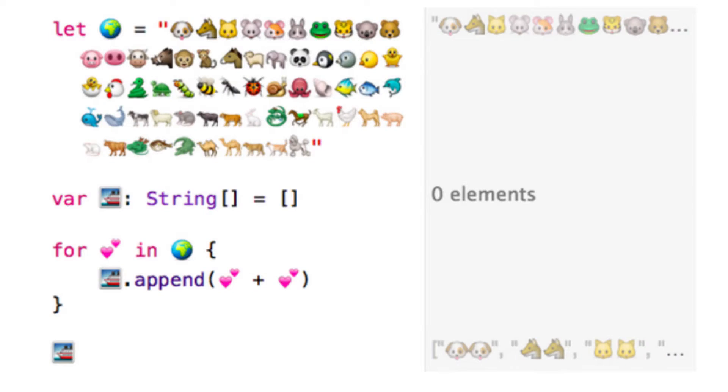The first buzz on the social network about Swift is that you can actually use Unicode to name your variables. This is very cute, however there are other points that make Swift such a unique language.